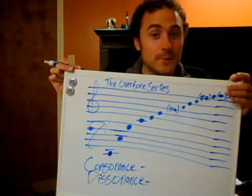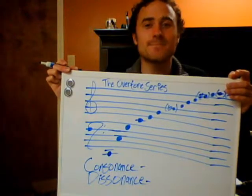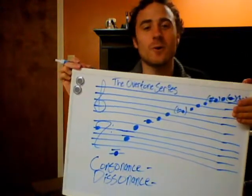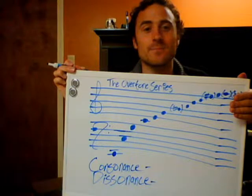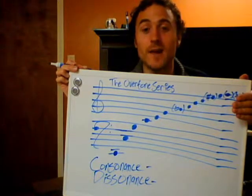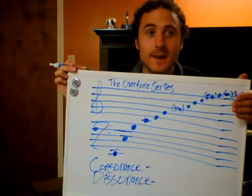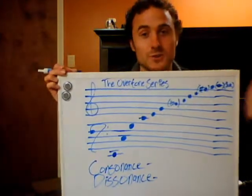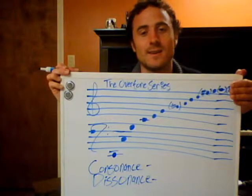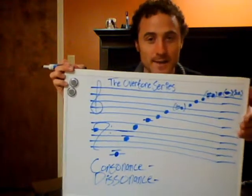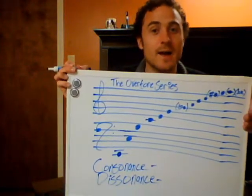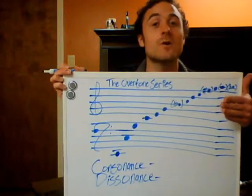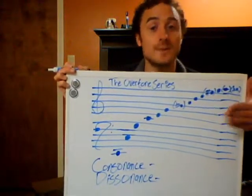The consonant values of a tone, or a scale, or the consonant value of any chord scale — any notational relationship — is given through the understanding of how the tones relate one to another through the overtone series.